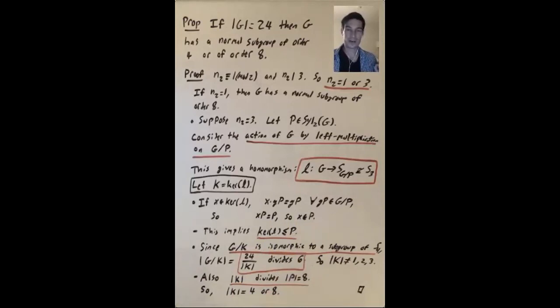So that tells us something because Lagrange's theorem says now the size of the kernel divides the size of P. What else do we know? Well, first isomorphism theorem says that g mod the kernel is isomorphic to a subgroup of S3. So that means the order of this quotient, g mod k, which is the order of g divided by the order of k, 24 over the order of k, divides 6.